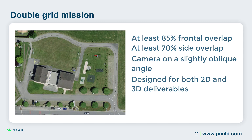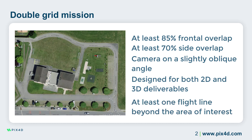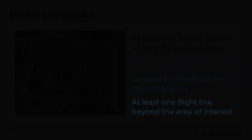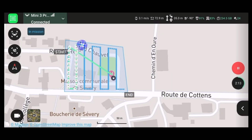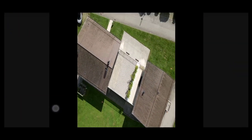Just like with a single grid mission, remember to fly one flight line beyond the extent of the project area. If you cannot capture a project area with a single battery or require additional detail of specific regions, you can fly multiple double grid missions to capture it. Now that we have discussed the basics of both grid missions, let's go into the field and capture the images.